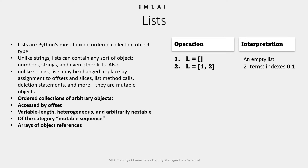When you say L equals open square bracket, one comma two — two objects inside it, both are int objects — and close the square brackets, it is a two-item object with indexes 0 and 1. The third example is nested sublists: inside a list, you have a string and then two lists in it — that is why it is called nested sublists.